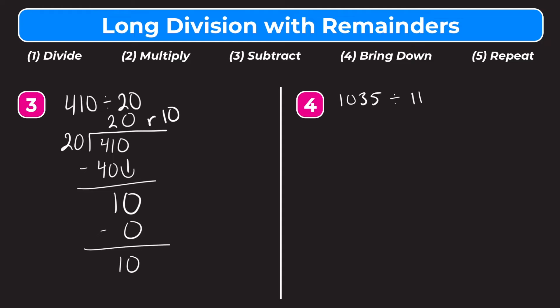Let's try number 4. We have 1,035 divided by 11. We can rewrite this as a long division problem: 1,035 goes under the bar, 11 goes outside. Step 1 is divide — how many whole groups of 11 go into 1? 1 is smaller than 11, so we move over one digit to 10. How many whole groups of 11 go into 10? It still isn't big enough, so we move over one more digit to the 3 and ask: how many whole groups of 11 go into 103?